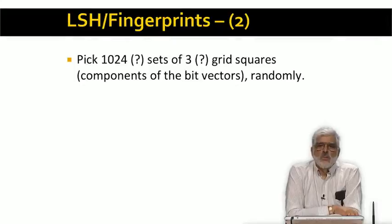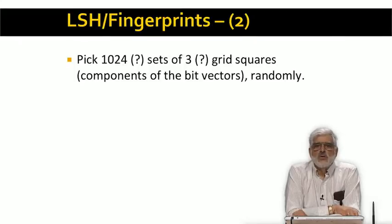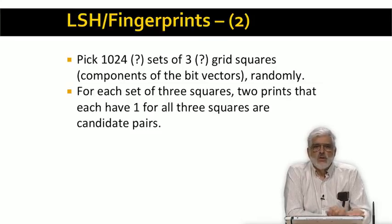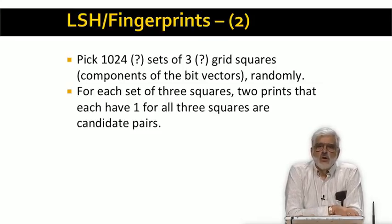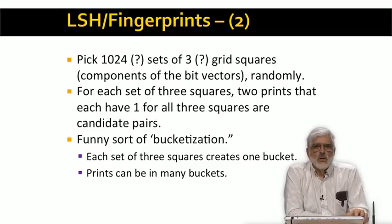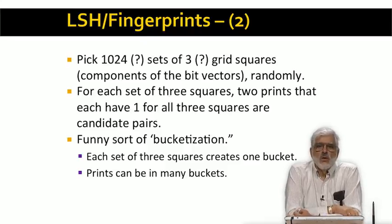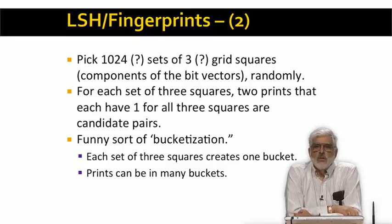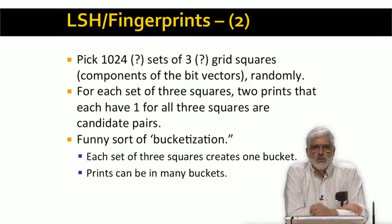For our LSH, we pick some number of sets of grid squares — or components of the bit vectors — that represent fingerprints. In our example, we'll use 1,024 sets of three grid squares each, which seems to be a good choice. For each set of three squares, we look at all the prints that have minutiae in each of these three squares. In a sense, we are throwing fingerprints into buckets, but each set of three squares corresponds to one bucket. And unlike a hash function, a fingerprint can be placed in many buckets. In fact, it would be normal for a print to be placed in several buckets this way.